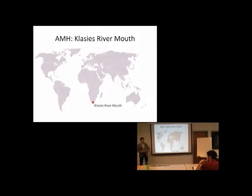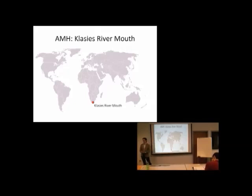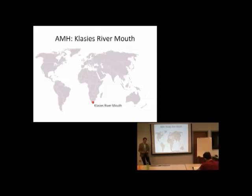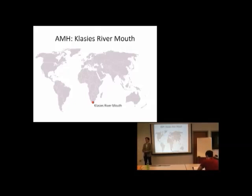Who was it that replaced or possibly mixed with Neanderthals and other archaic forms? AMH stands for anatomically modern human — effectively someone just like us, within the range of human variation we have for all living people today. They are Homo sapiens, more specifically the subspecies Homo sapiens sapiens. They are absolutely, effectively us.